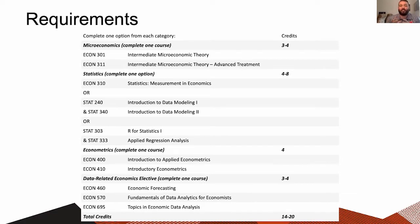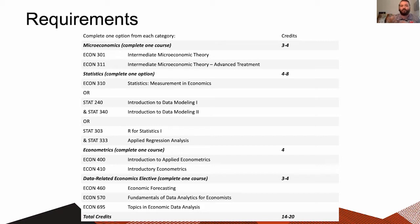To complete the microeconomics requirement, you'll need to enroll in either Econ 301 or Econ 311 — Econ 301 being Intermediate Microeconomic Theory and Econ 311 being the advanced treatment of that. The second area is the statistics requirement. There are three different options and you only need to complete one: the first is Econ 310, our Econ stats class; the second is completing Stats 240 and Stats 340; and the third option is completing Stats 303 and Stats 330. You only need to choose one of these three options.